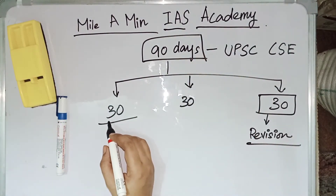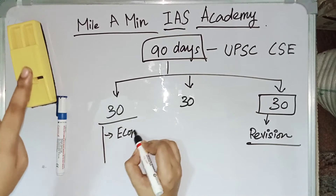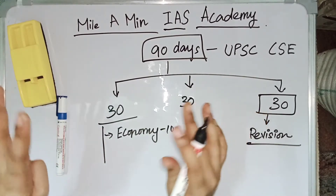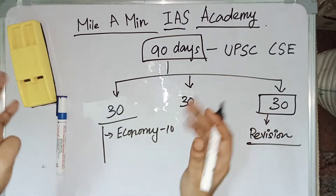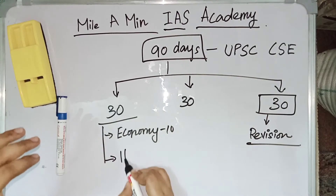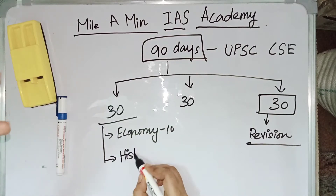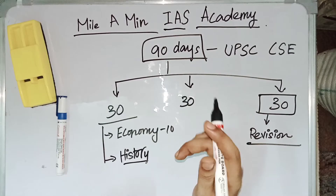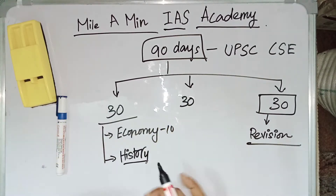According to me, economy is the most easy subject. So first I will be starting from economy and let us allocate 10 days for economy. Economy is not a vast subject — 10 days is sufficient. After economy, let us take history. In history we have ancient history, medieval history, as well as modern history. We have posted videos for ancient and medieval history on our YouTube channel but we do not have content for modern history. So let us study history next to economy and allocate around 10 days for history as well.